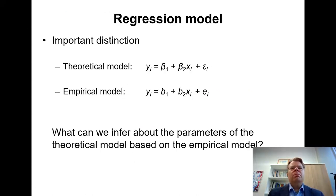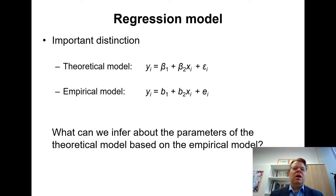Recall that when I introduced the ordinary least squares estimator, I already drew this distinction between the theoretical model, which includes Greek letters betas for the coefficients and epsilon for the random error term. You can think about this theoretical model as a model of how the data are being generated in the real world. Then we have this empirical model with Latin alphabet B for the intercept and slope coefficient and E for the regression residual — something that we fit to our empirical data.